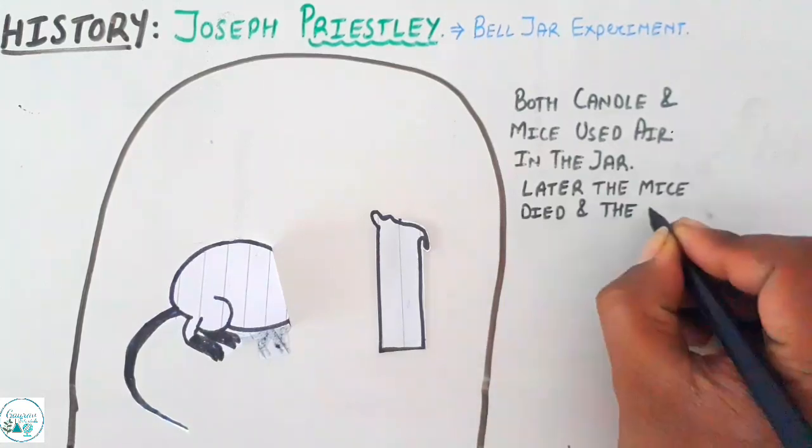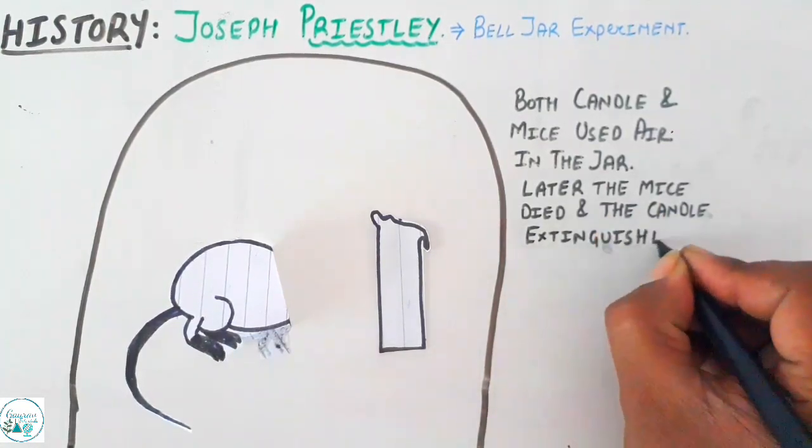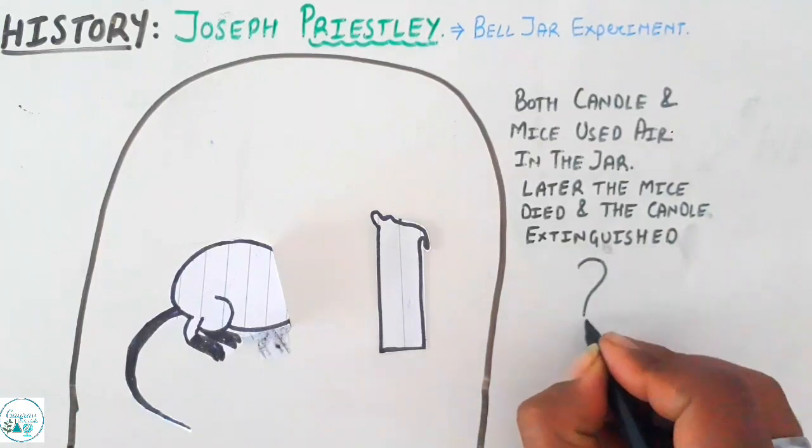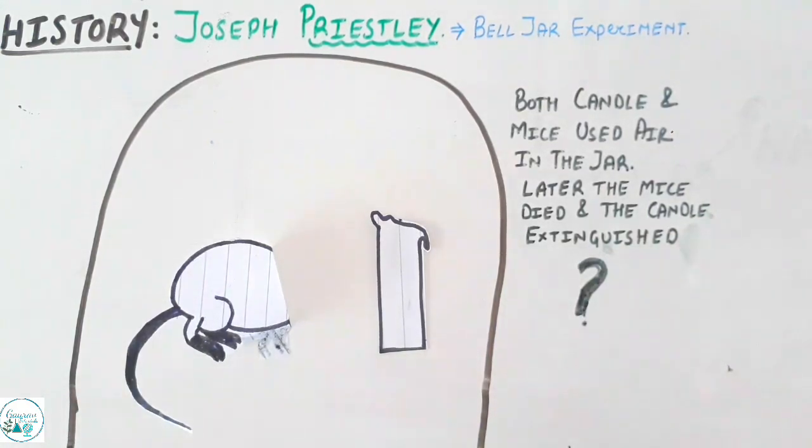Later on it was found that the mice as well as the candle had certain problems - the mice died and the candle extinguished. This compelled Priestley to think what could be the probable reason for this, and he concluded that both the mice and the candle would have used up the air and turned it into a foul air.